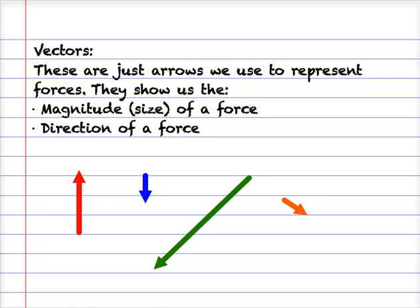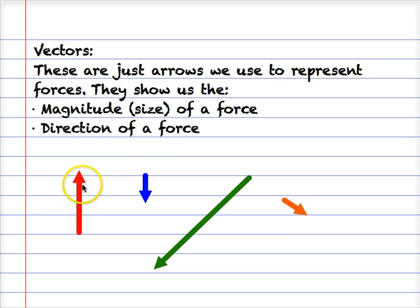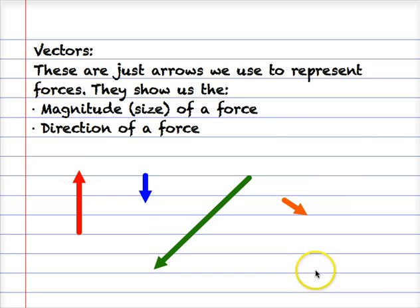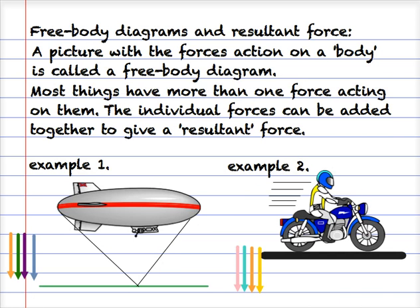I've used arrows to represent the forces on the motorbike, and these arrows are termed vectors. They show us two things: the size of the force — we've got a big force here, small force here, medium force here — and the direction of the force, up, down, diagonally left and right. If drawn to scale, the scale would tell us how big the forces are in newtons. In physics we call these diagrams with force vectors on them free body diagrams, and they help us understand the total or resultant force on an object.